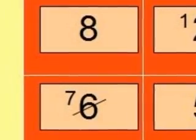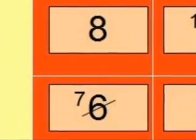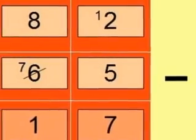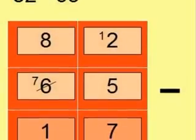Then we can carry out our sum. 5 from 12 is 7, and 7 from 8 is 1, giving us 17.